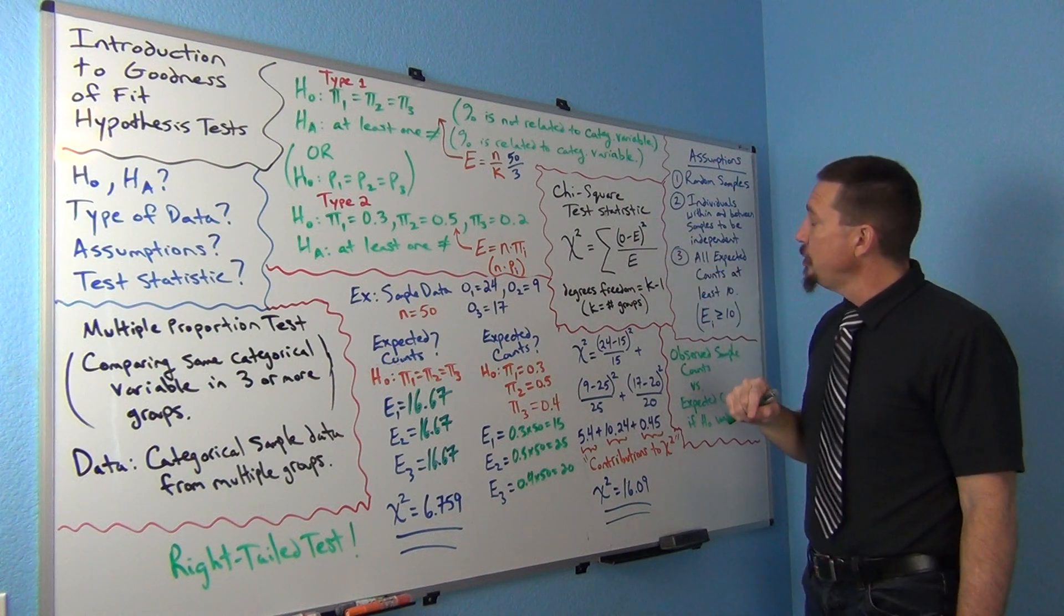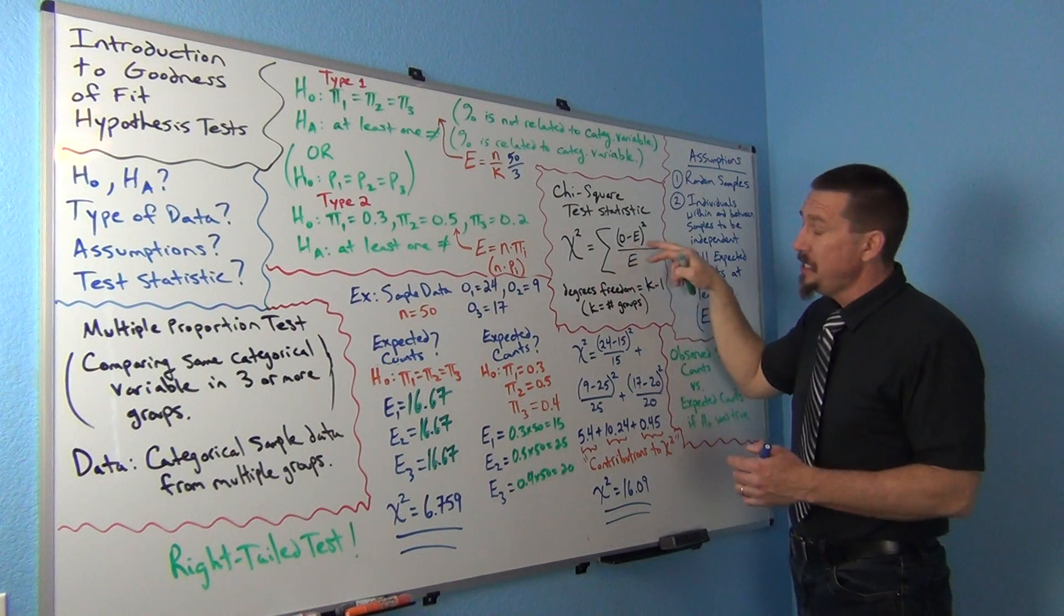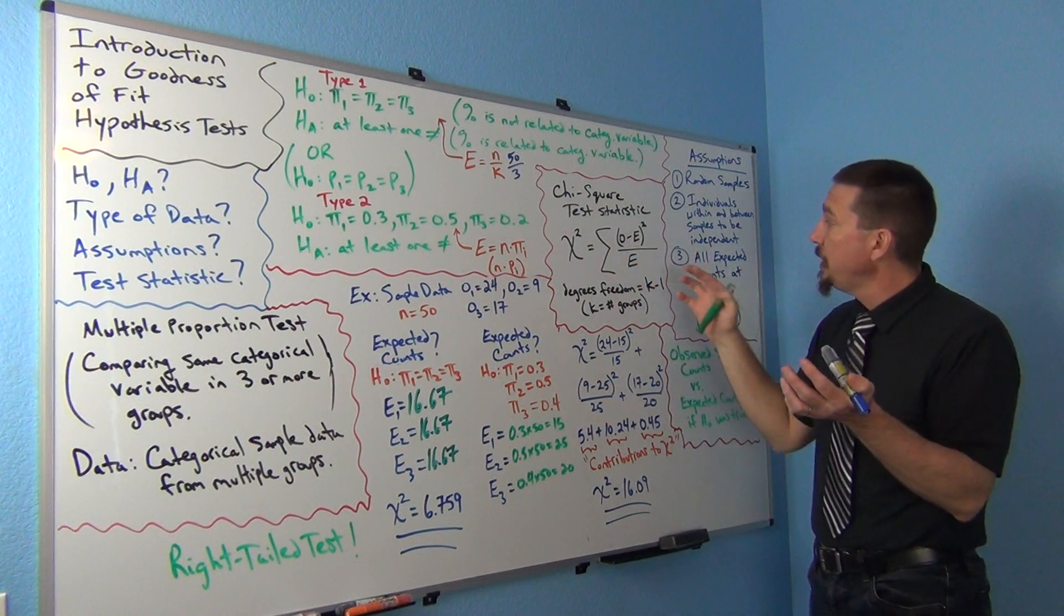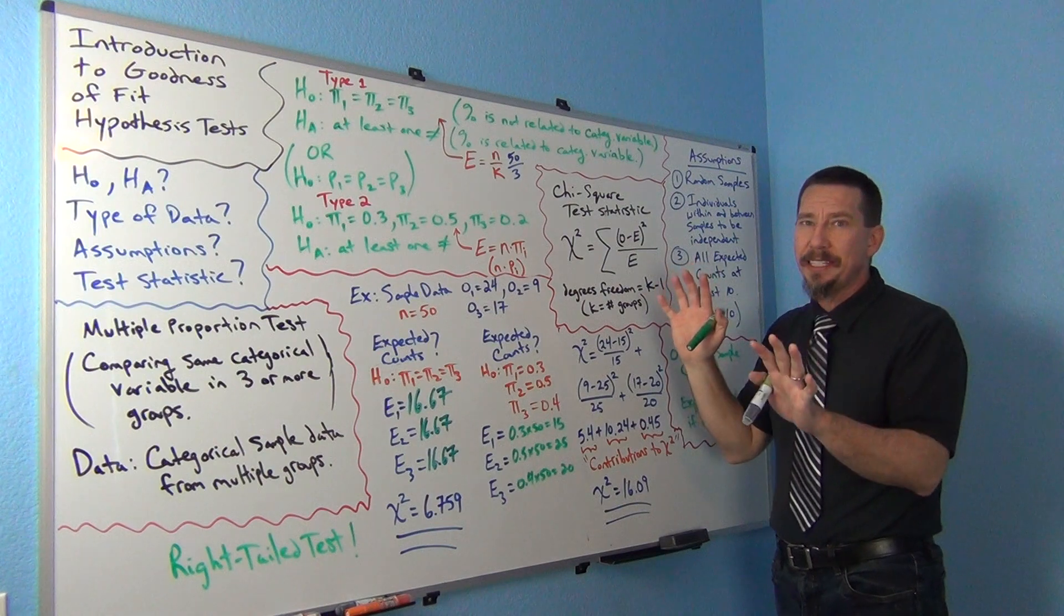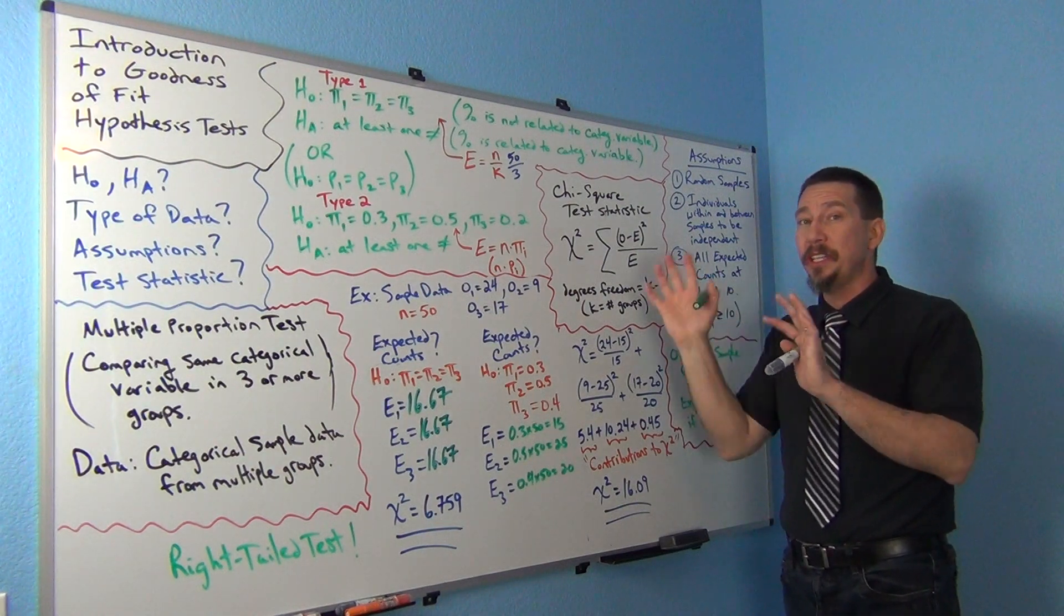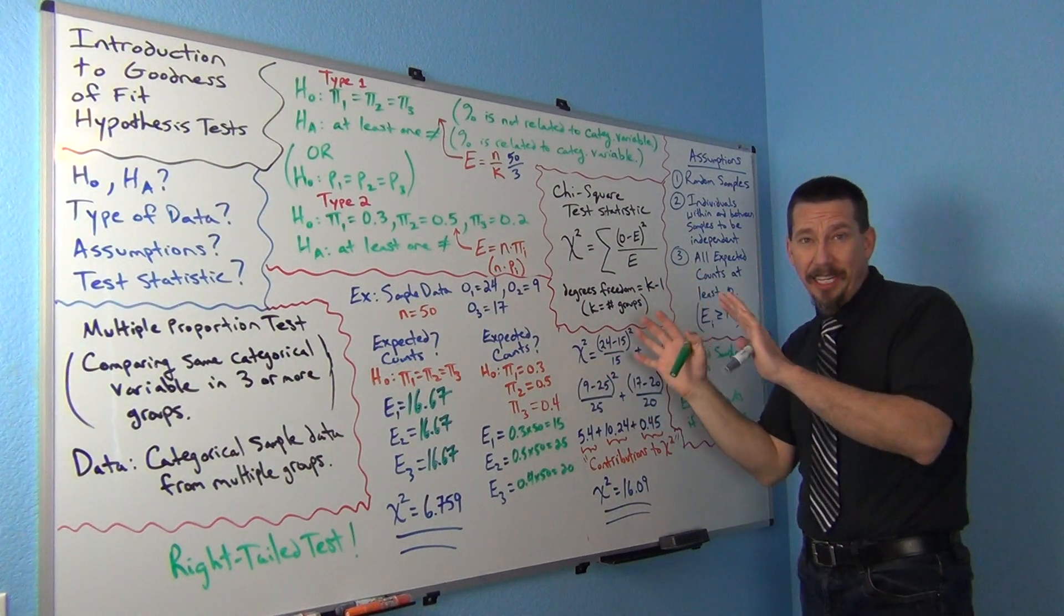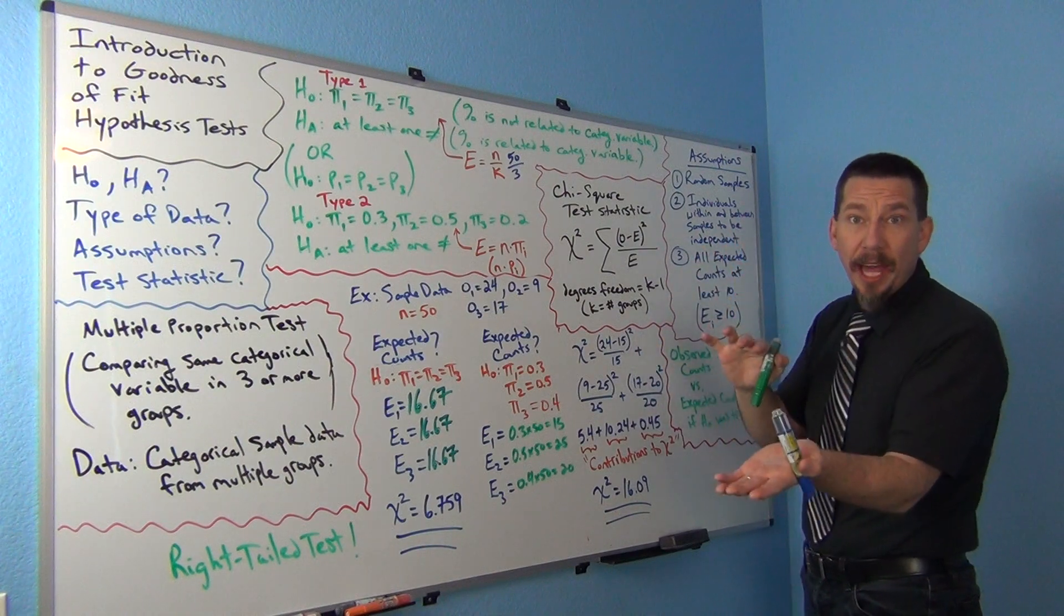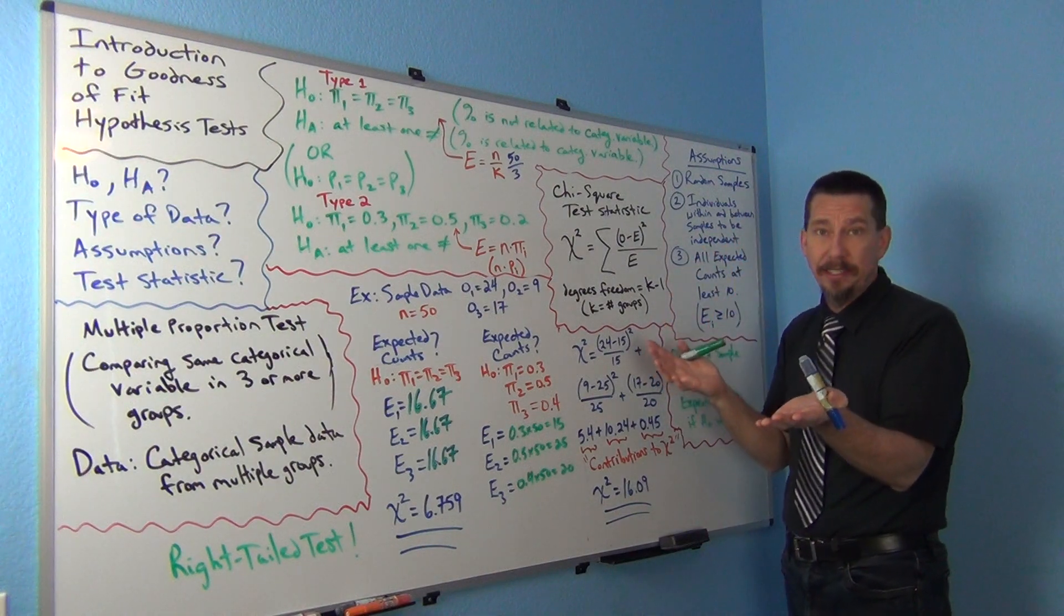Now what that's doing is you're sort of measuring the difference between the observed and the expected. That's really the big key. You're trying to figure out if the expected is significantly different than the observed. Is my sample data significantly disagree with the null hypothesis? That's the point of a test statistic.